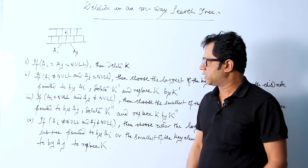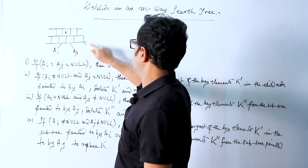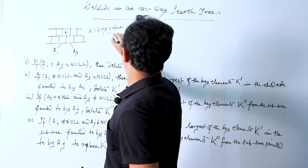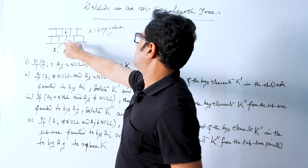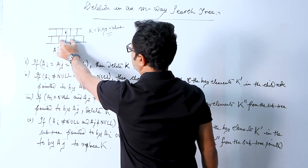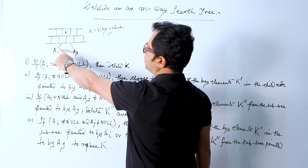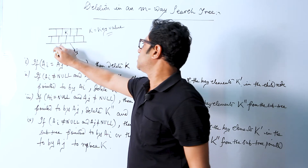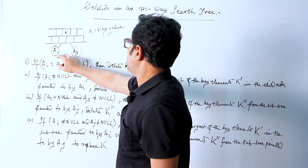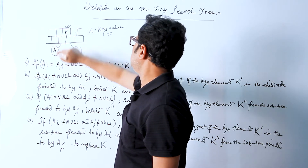In this video I am going to explain the different cases of deletion. Suppose we consider this portion as part of the M-way search tree, where K is a key value. K has two pointers leading to two child nodes: the pointer A-I points to the left child node and A-J points to the right child node. These are the addresses of the left subtree and right subtree from the node containing key value K.